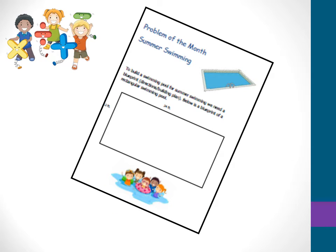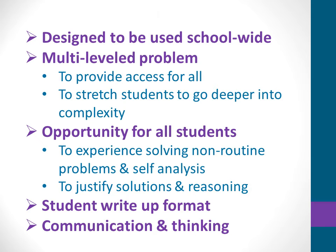This problem of the month is called Summer Swimming. It's a geometry problem. It starts for the younger students to just recognize shapes and put them together to make other shapes, all the way up to area and volume. This problem of the month is designed to be used school-wide. However, it can be just used in one classroom if a school doesn't want to do it. It's multi-level to provide access for all.